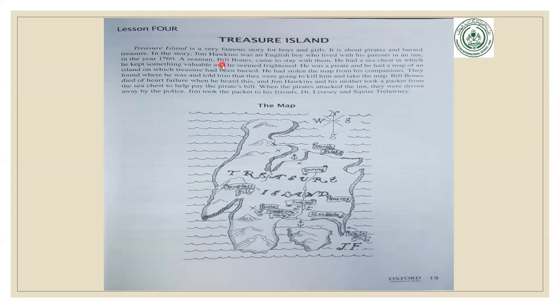In the story, Jim Hawkins was an English boy who lived with his parents in an inn in the year 1760. A seaman, Bill Bones, came to stay with them. He had a sea chest in which he kept something valuable, and he seemed frightened. A sea chest is a box where people traveling at sea keep their valuable things. Pirates are sea rovers — people who steal things from ships at sea.